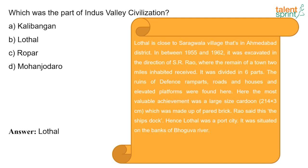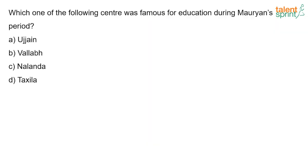The most valuable achievement was the large-size dock which was made up of paired bricks. S.N. Rao said this is the ships' dock — hence Lothal was a port city. It was situated on the bank of the Bhogava river. Next question: which one of the following centers was famous for education during the Mauryan period? The answer is Takshila.